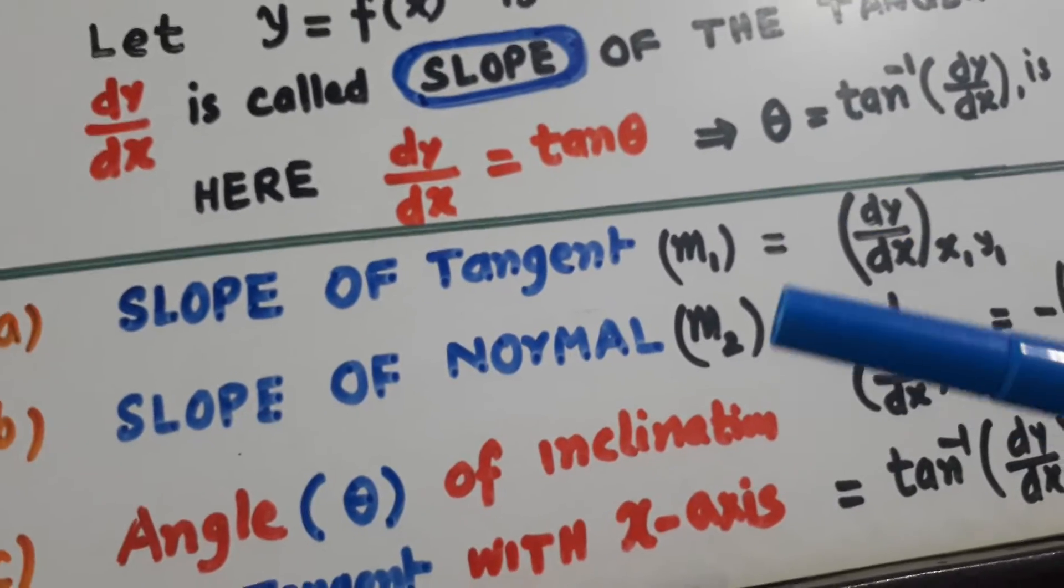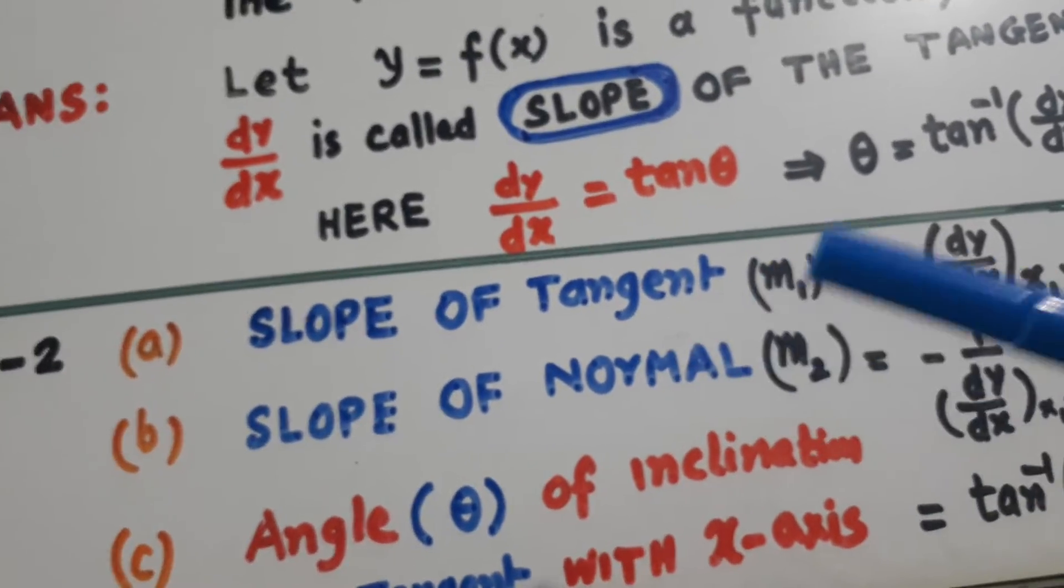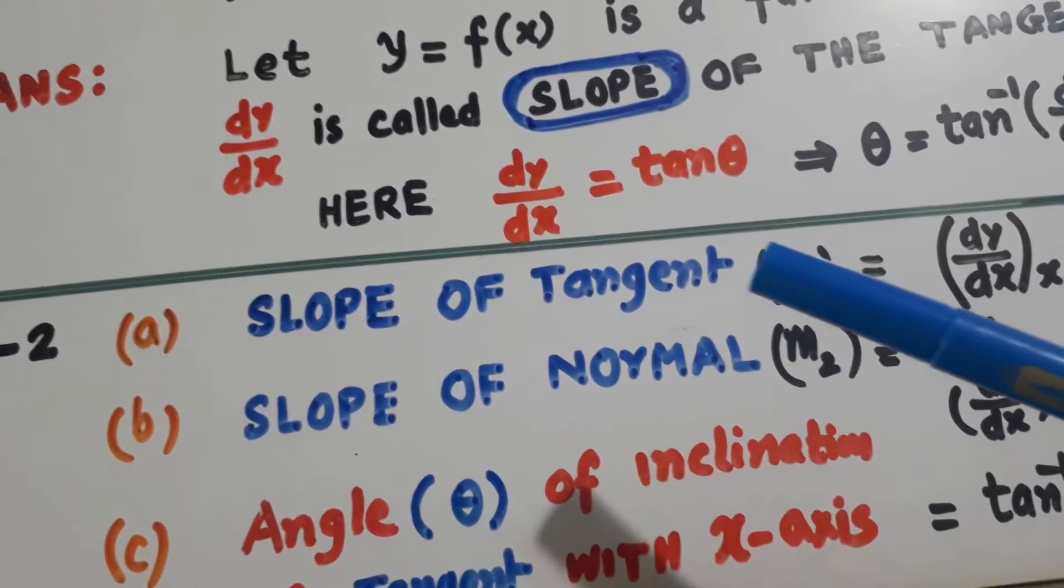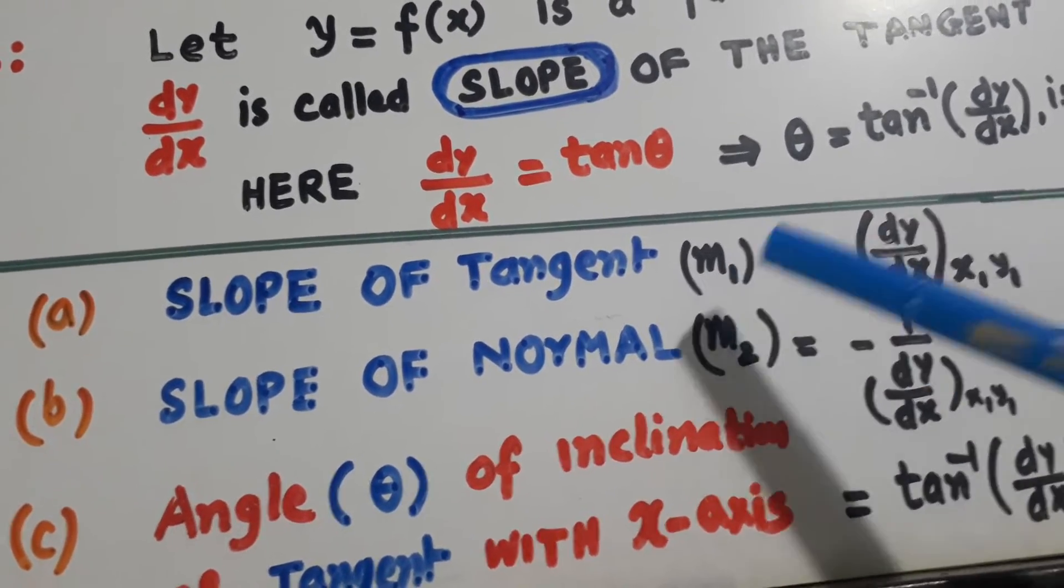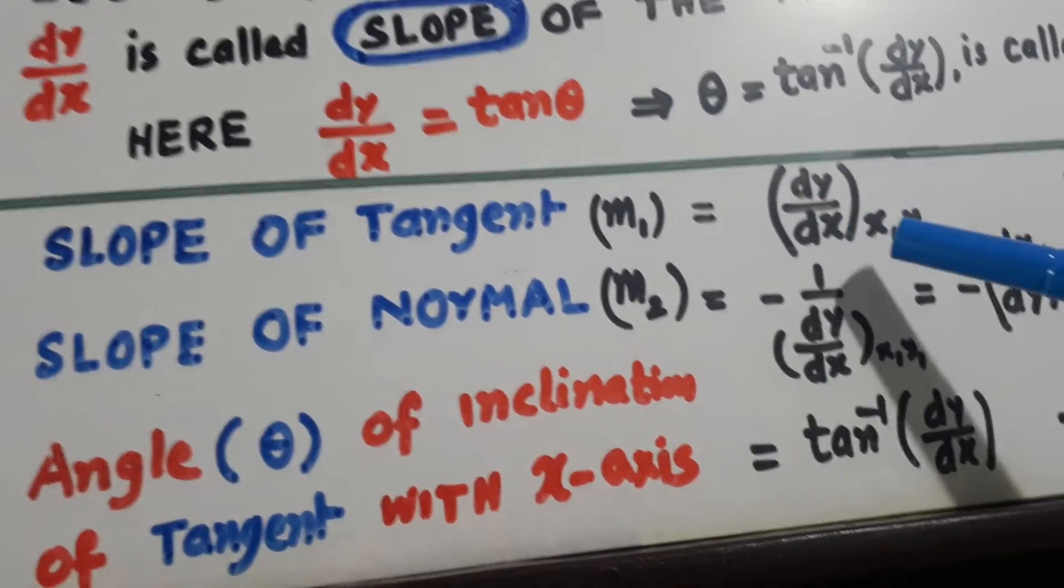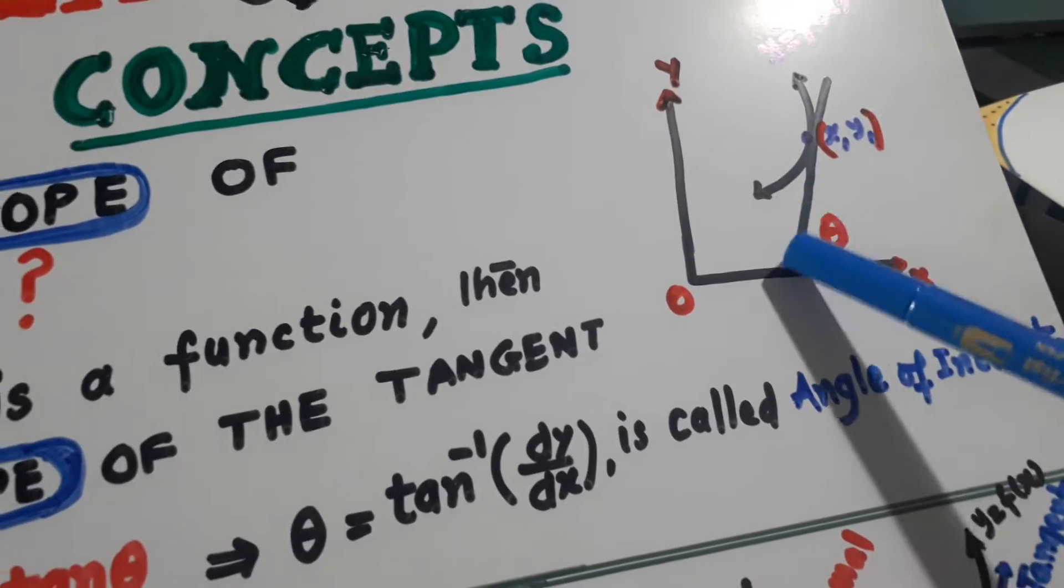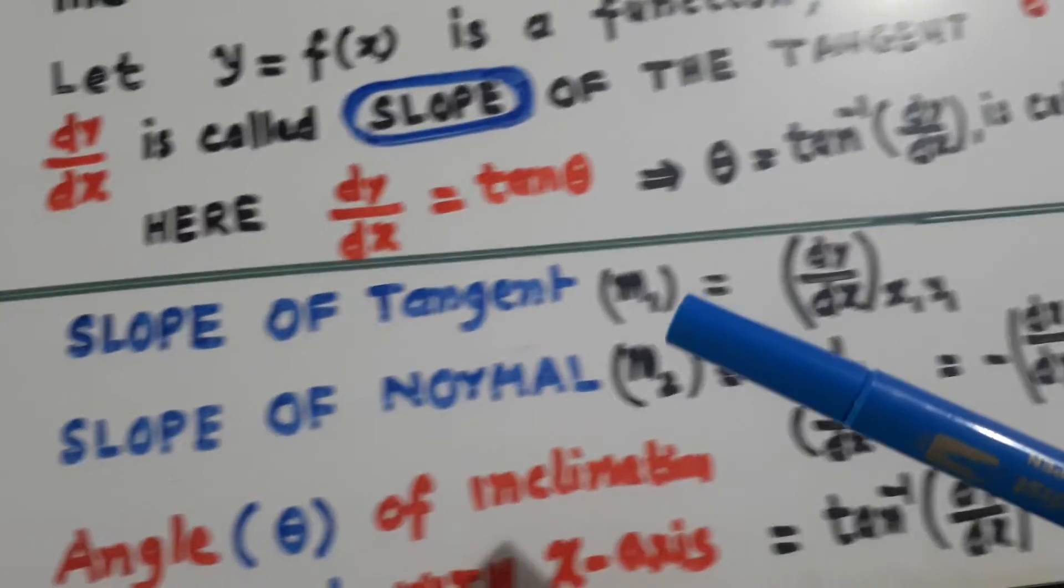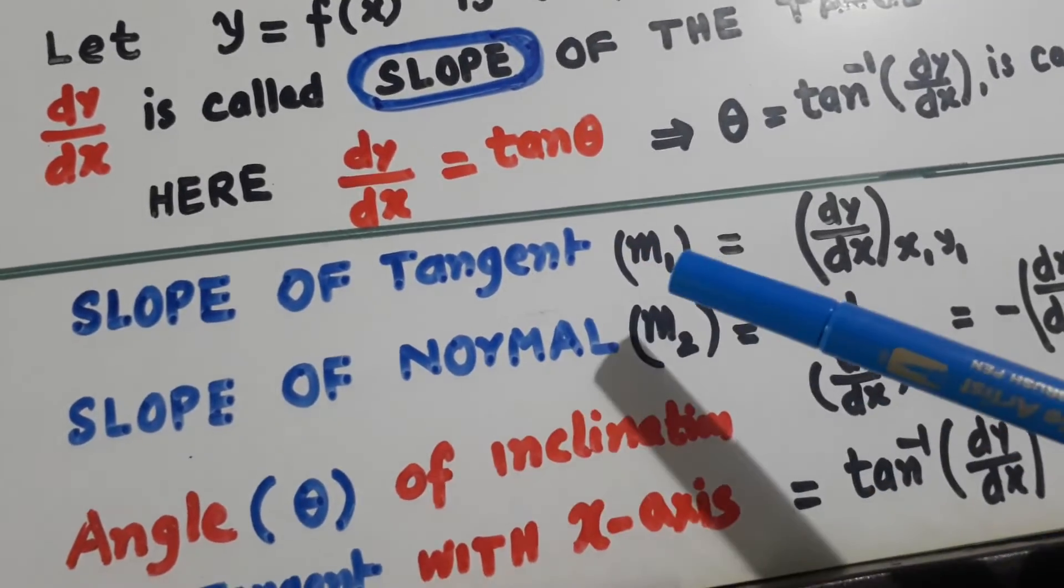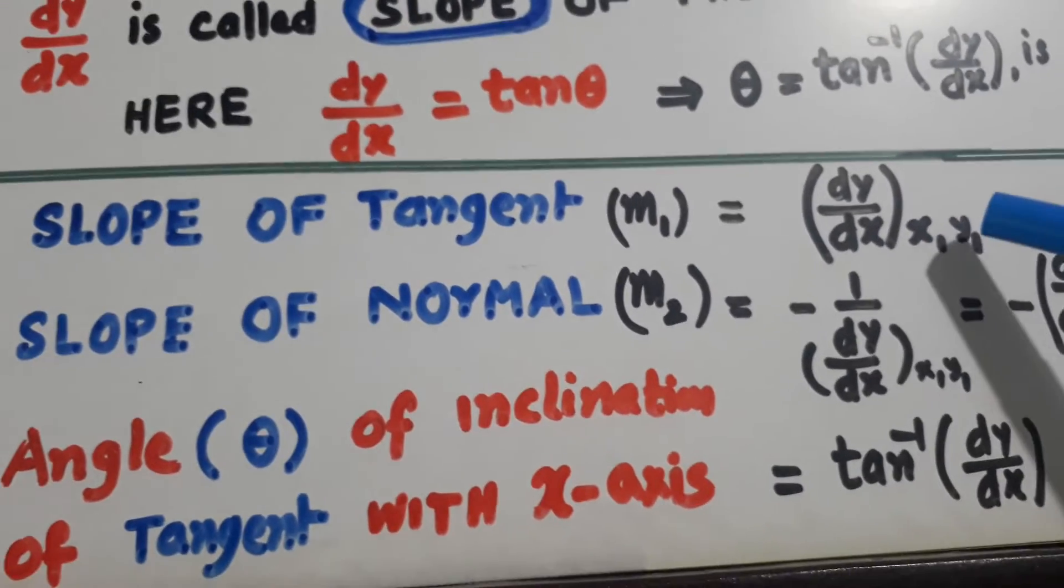Now, the second concept is slope of tangent. It is denoted with m1 or dy by dx at (x1, y1). It is the slope. It is the tangent drawn at the point (x1, y1). So slope of tangent is dy by dx at the point (x1, y1).